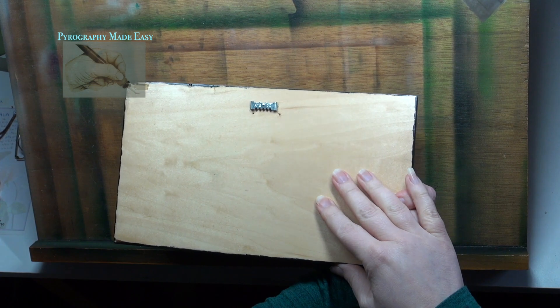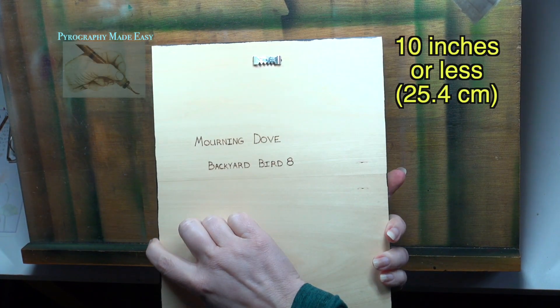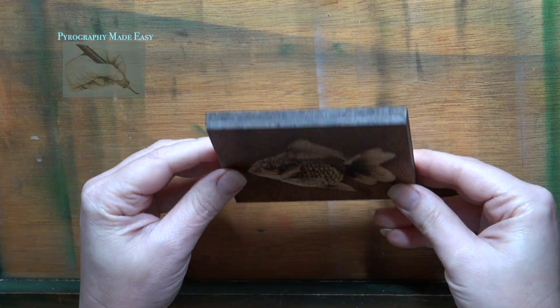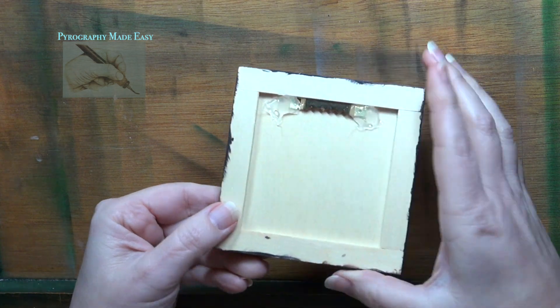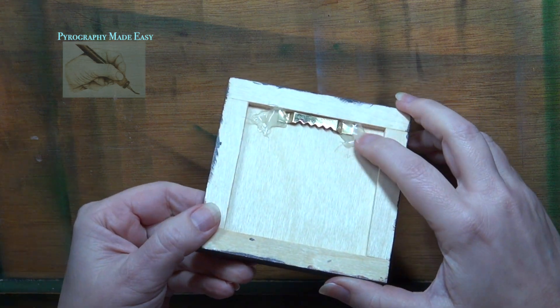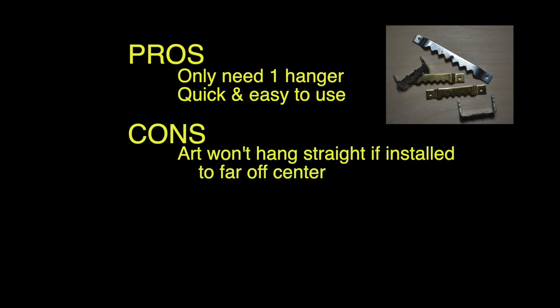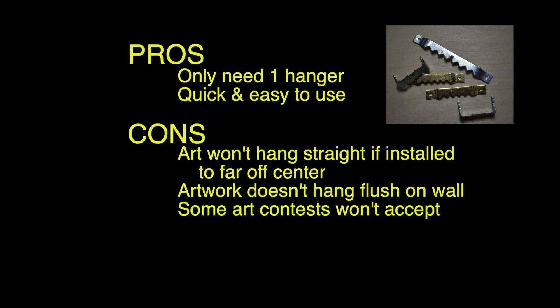I use sawtooth hangers on smaller artwork. I consider smaller artwork to be 10 inches or less in width. On this really small and thin artwork, I used a hot glue gun to secure a prongless sawtooth hanger to the back of the artwork. The pros: only one hanger is needed, they are quick and easy to use. The cons: if installed too far off center, the artwork won't hang right, artwork doesn't hang flush on the wall, some art contests won't accept artwork that uses sawtooth hangers. I wouldn't trust them on large or heavy artwork.